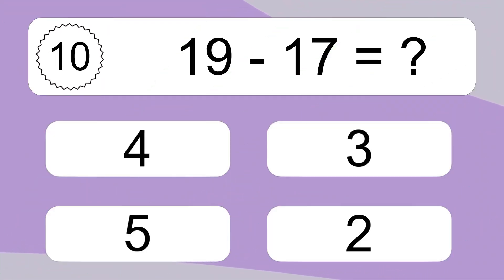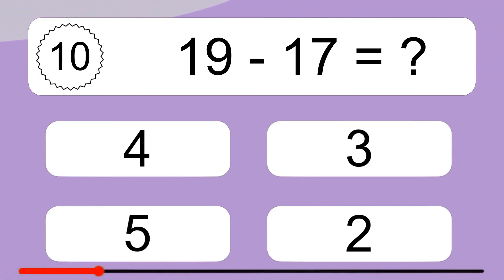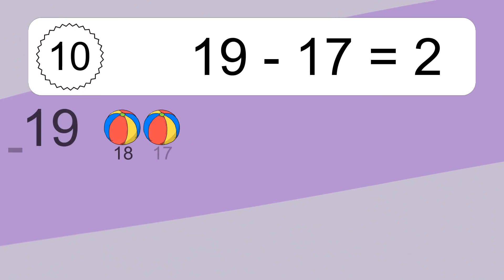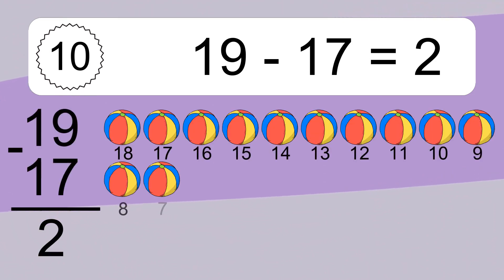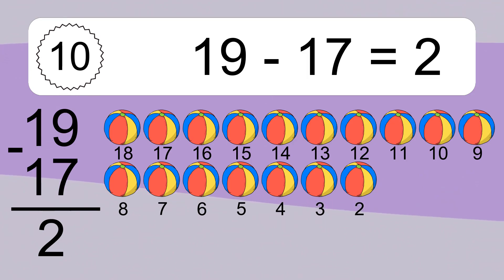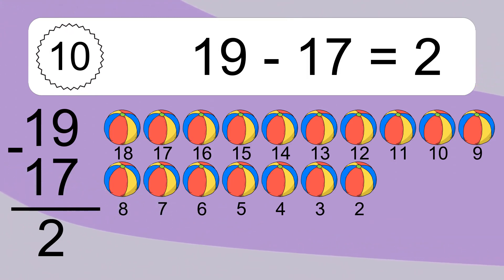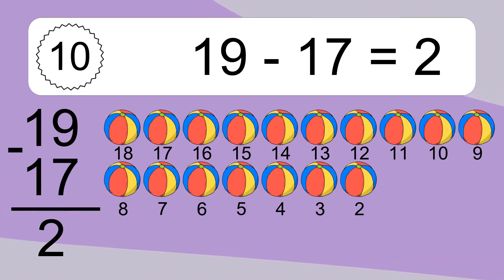19 minus 17 equals what? 19 minus 17 equals 2. Let's count it: 18, 17, 16, 15, 14, 13, 12, 11, 10, 9, 8, 7, 6, 5, 4, 3, 2.